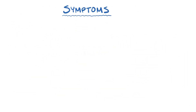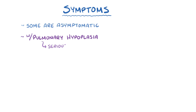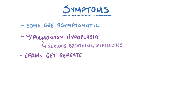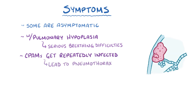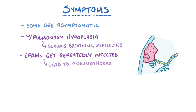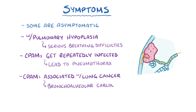Symptoms of babies born with CPAMs vary. Some are asymptomatic, whereas others with pulmonary hypoplasia can have serious breathing difficulties. CPAMs can also get repeatedly infected, and can also lead to a pneumothorax if the CPAM develops a hole that allows air to go from the airway right into the pleural cavity. Finally, CPAMs are associated with lung cancer, specifically bronchoalveolar carcinoma and pleuropulmonary blastoma.